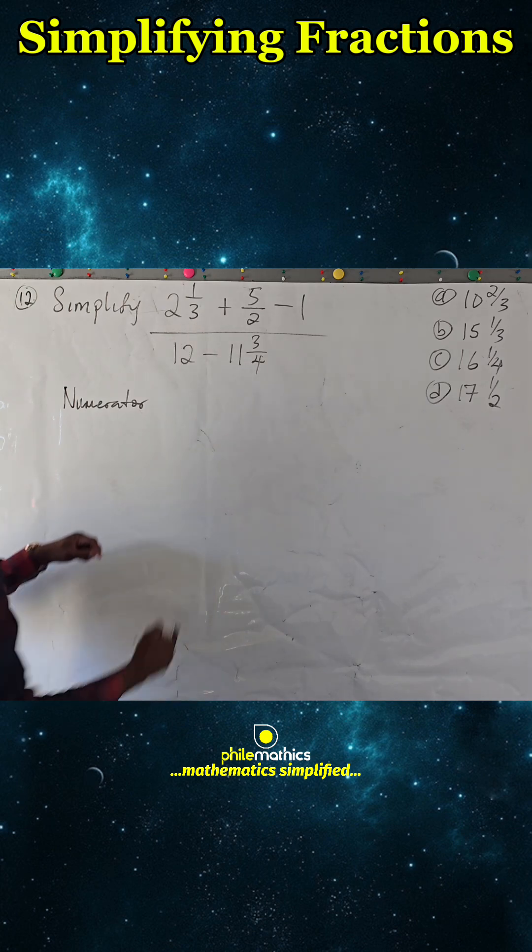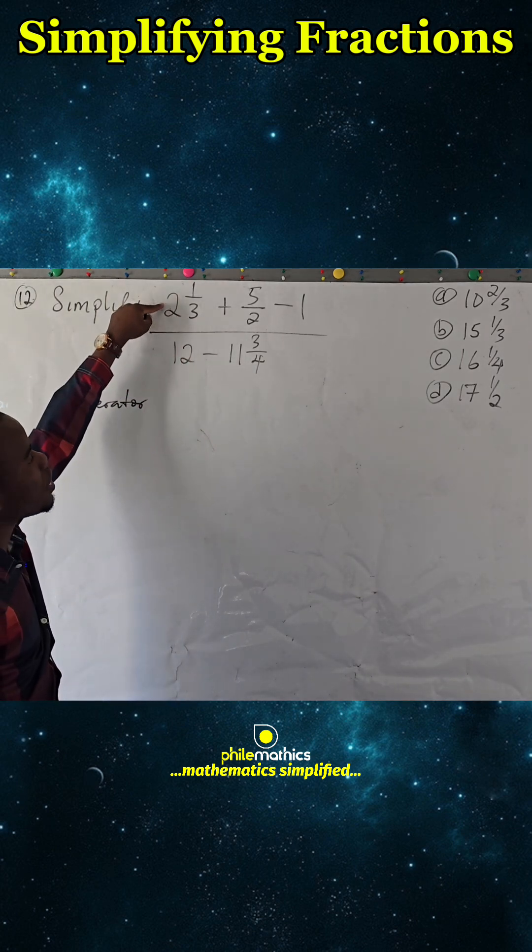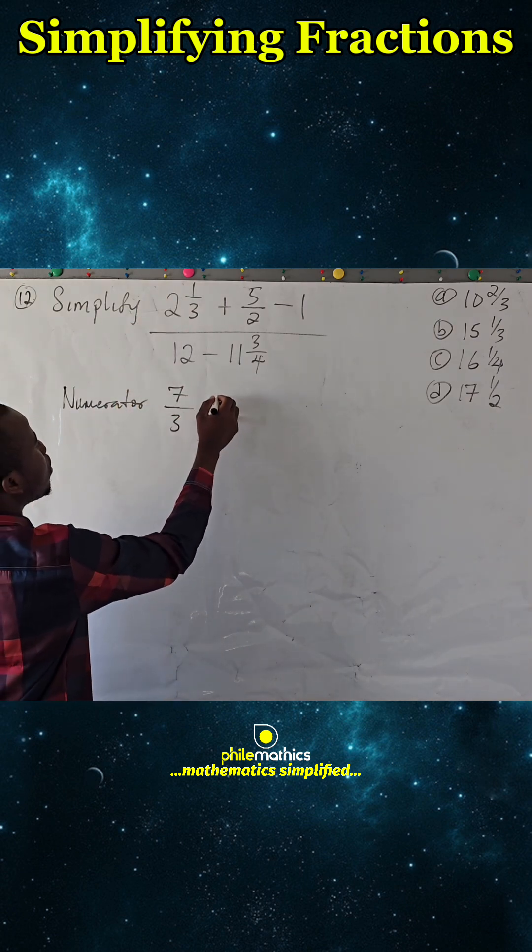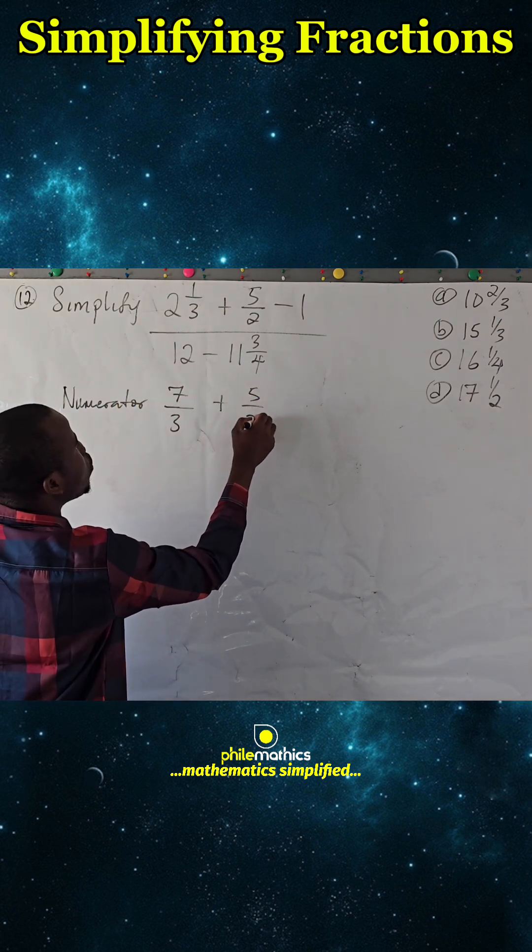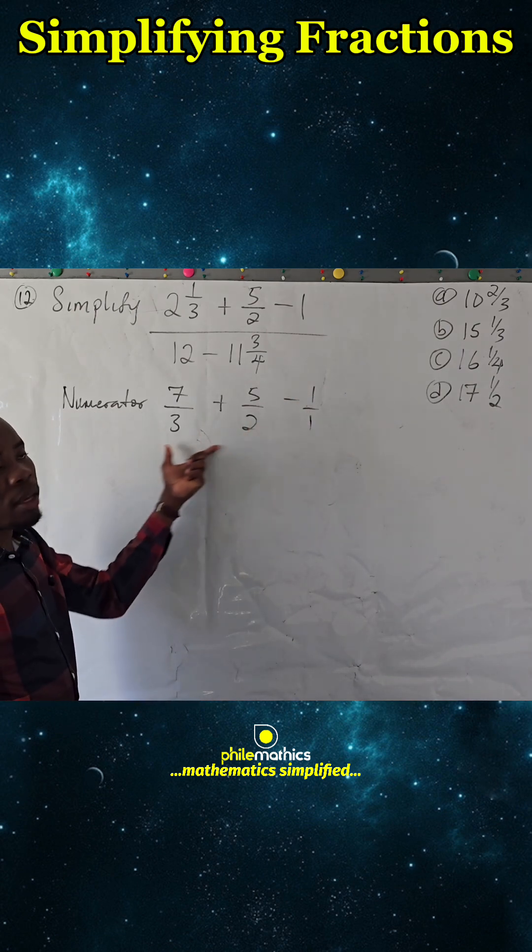We convert this mixed fraction to improper fraction. It will be 3 times 2 is 6, plus 1 is 7 over 3, plus 5 over 2, minus 1 over 12. The LCM here is 6.